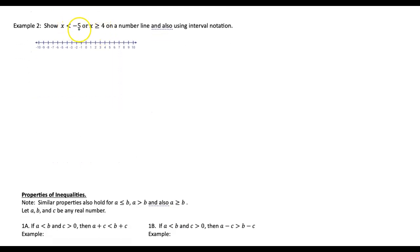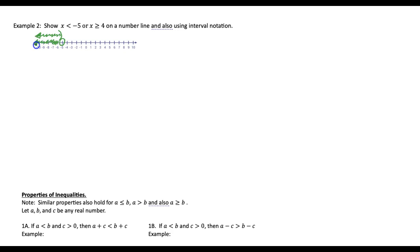x is less than negative 5 or x is greater than or equal to 4. So x is less than negative 5 would have an open circle or parentheses on negative 5. If you're going to write a parentheses, make sure the parentheses points towards the direction you're shading. In this case, we're going to shade where values are less than negative 5, so on the left. The parentheses would point to the left, and we keep going infinitely in that direction.